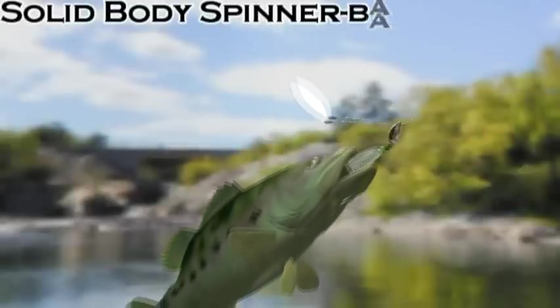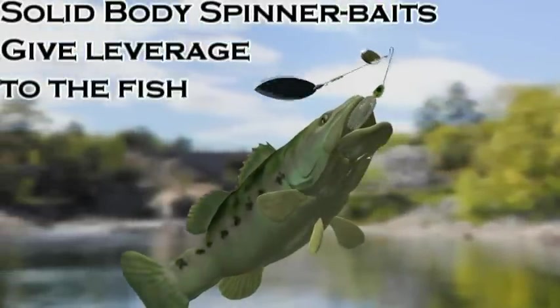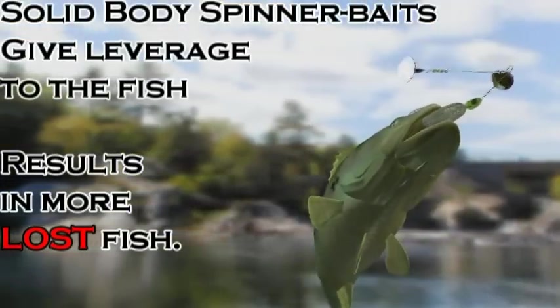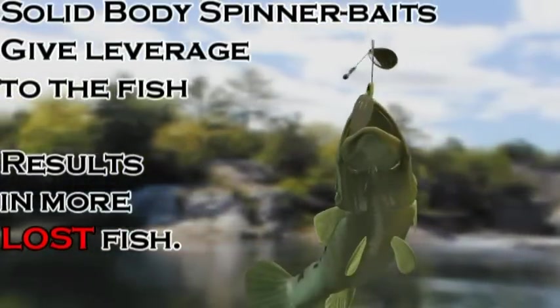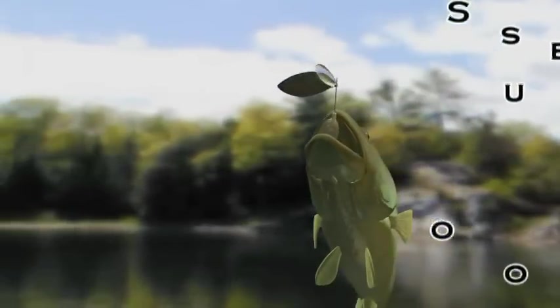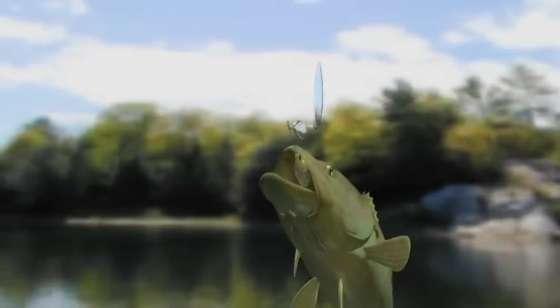The number one reason we lose fish on solid body spinner baits is when the fish jumps and tries to dislodge the bait. As the fish jumps frantically, the weight of the blades and the bait flail around and dislodge the bait from the fish's mouth, resulting in lost fish. And that can possibly be the fish of a lifetime.